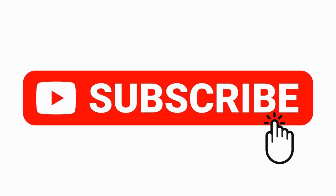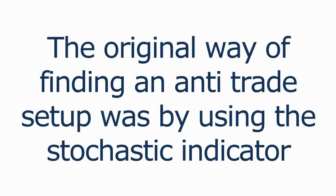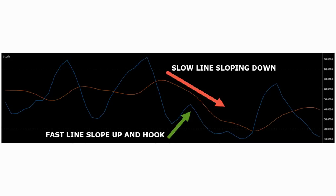Before we continue, please take a second to subscribe to the channel. The original way of finding the anti-trade was by using the stochastics indicator set to the following: %K is 7, %D is 10, and smoothing — if available on your charting platform — is set to 4. The anti is pretty easy to spot: the orange line, which is the slow line, slopes to the downside, and the blue line, the fast line, has crossed to the downside under the orange line and is hooked up towards the slow line.